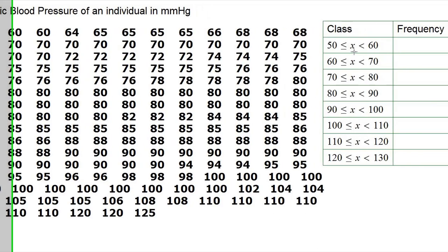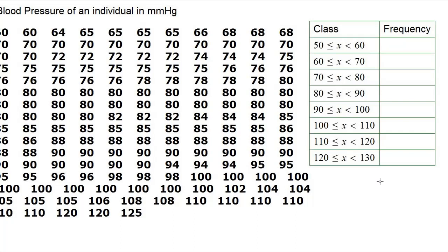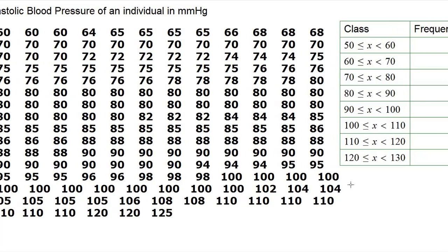For the classes, we are making them equally wide. Note that for a frequency table we need the classes to be disjoint, but if we are going to make a histogram, we also have to make all the classes equally wide and ensure that they are disjoint.